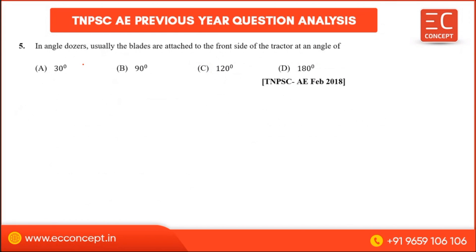In an angle doser, the blades are attached to the front side of the tractor at an angle of 30 degrees. So the answer is A.